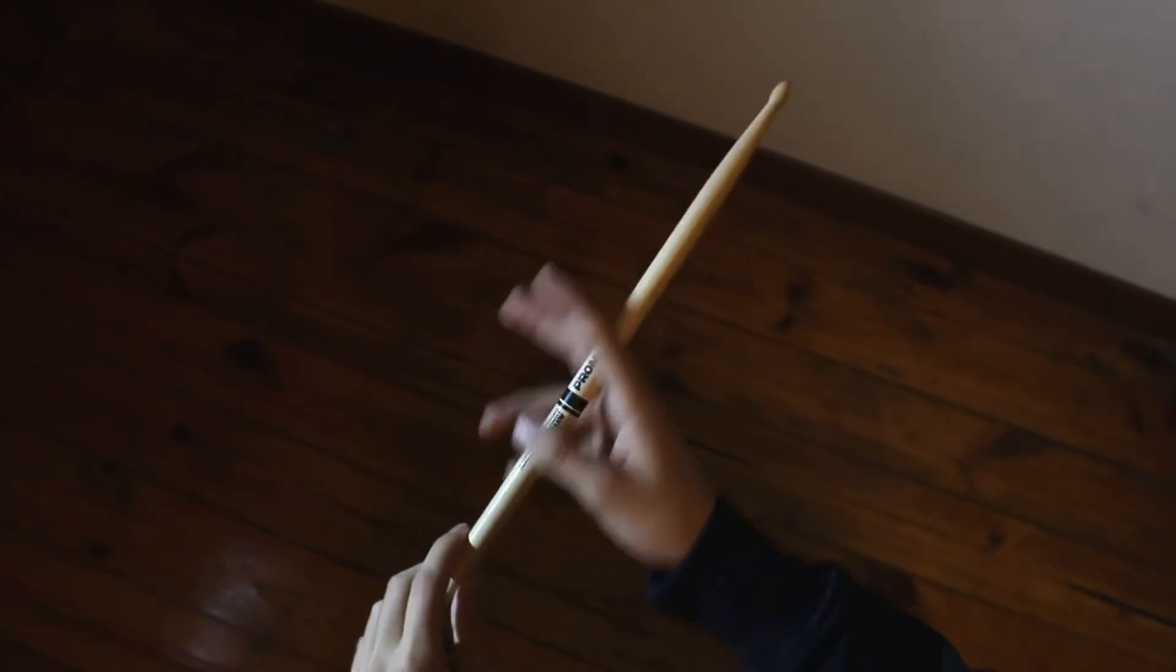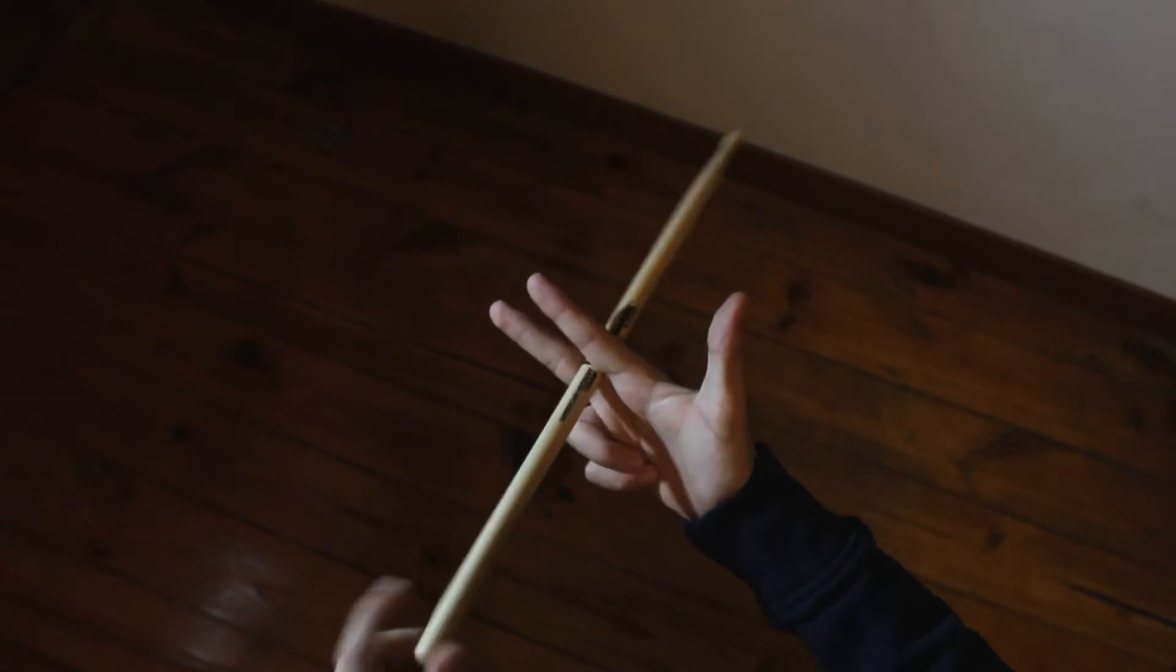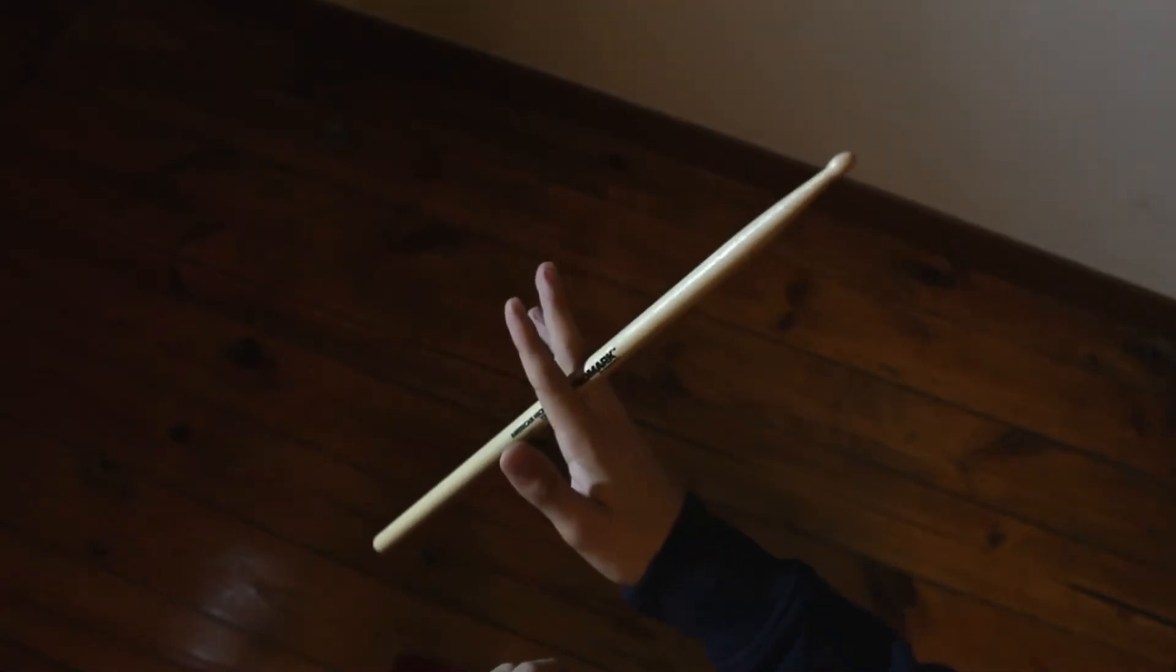Alright, so to do the second way, once again, you have to find the center of the drumstick and grip it like this, sort of like a cigarette.